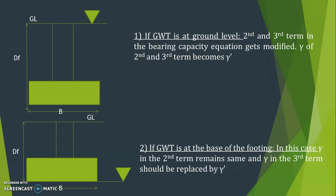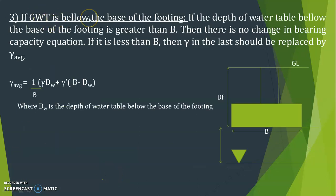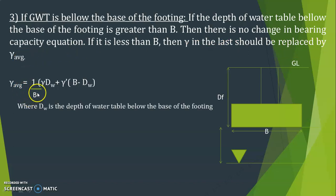There are three cases based on groundwater table position. Case 1: if the groundwater table is at ground level, both the second and third terms use γ' (submerged unit weight) instead of γ. Case 2: if the water table is at the base of the footing, the second term uses γ (unchanged) but the third term uses γ'. Case 3: if the groundwater table is below the base of the footing and the depth of water table below the base is greater than B, there is no change. If it is less than B, the third term uses γ_average, calculated using the formula with d_w (depth of water table below the base of the foundation).